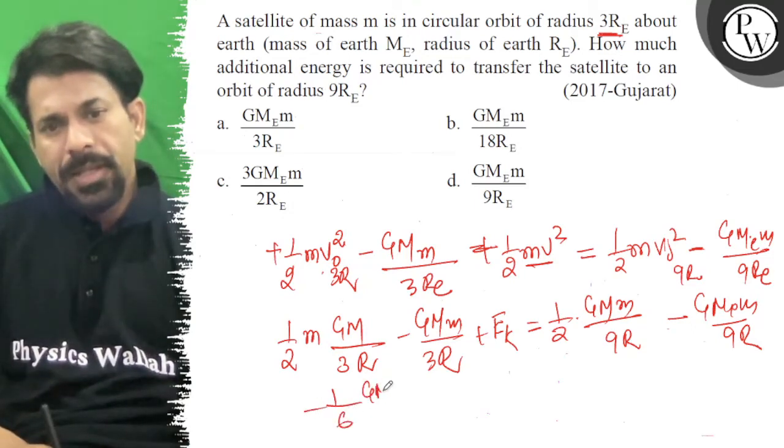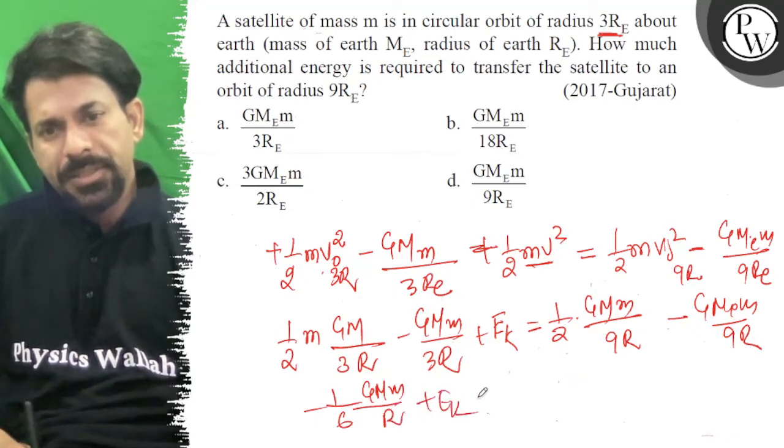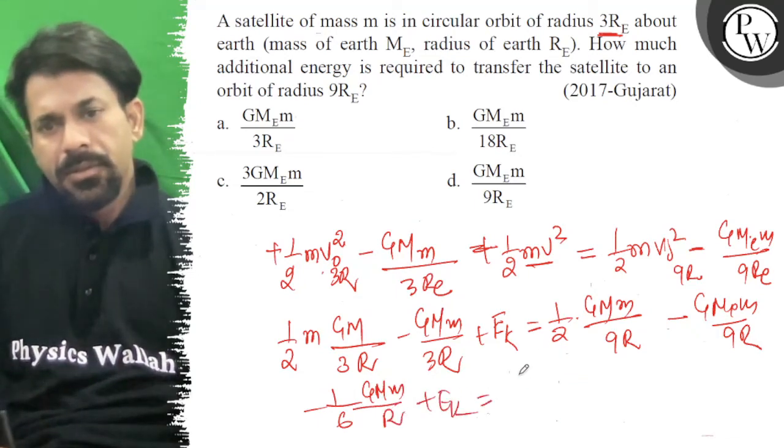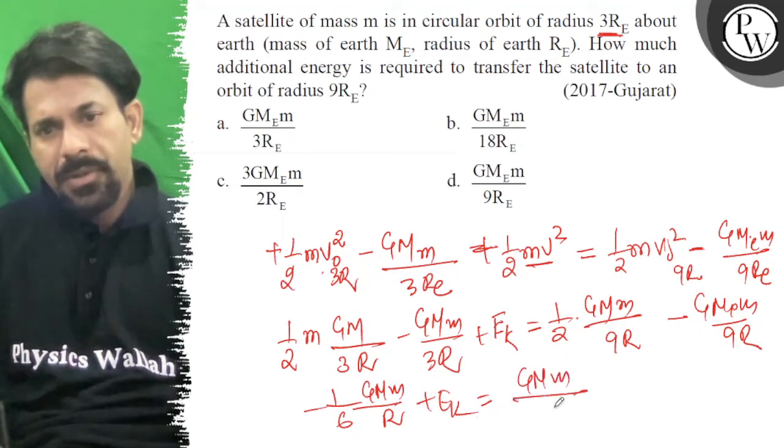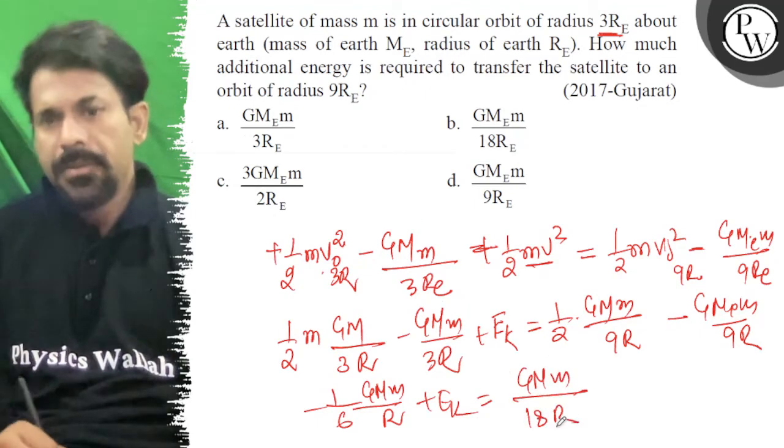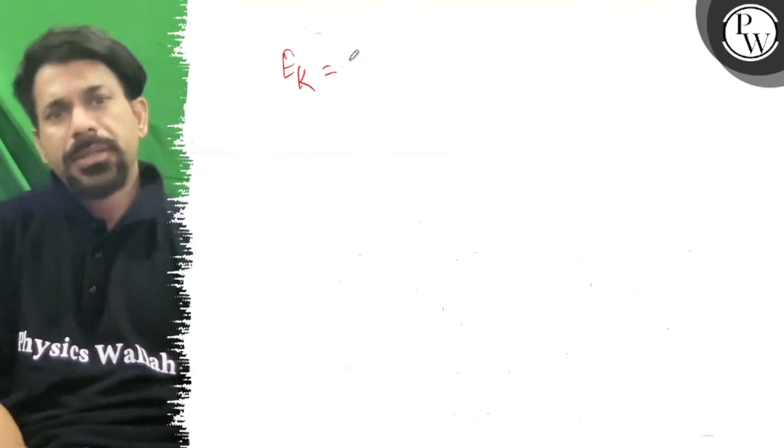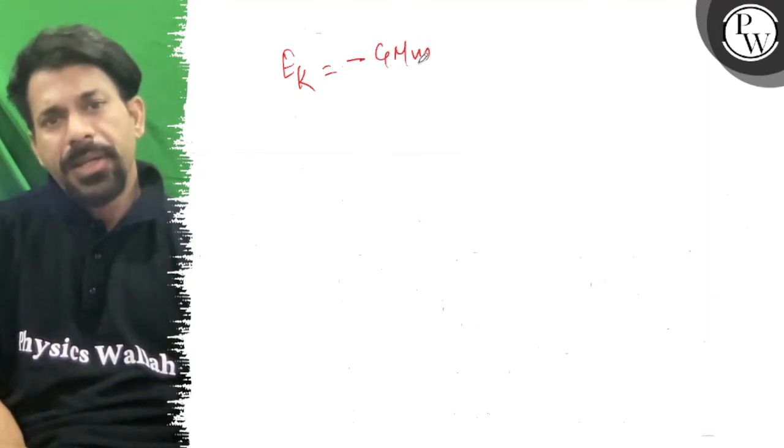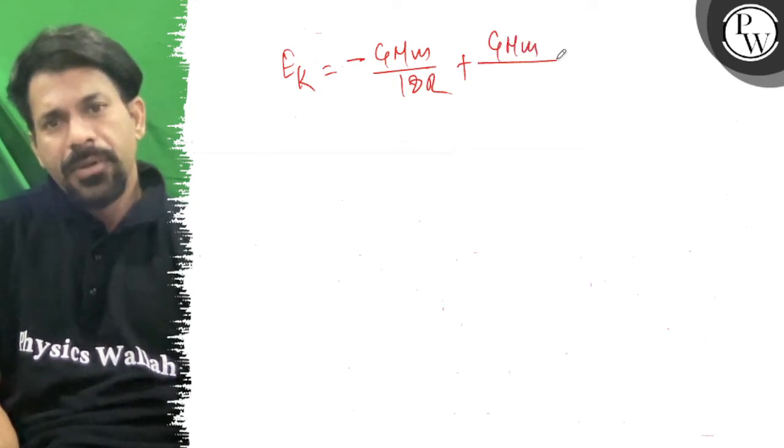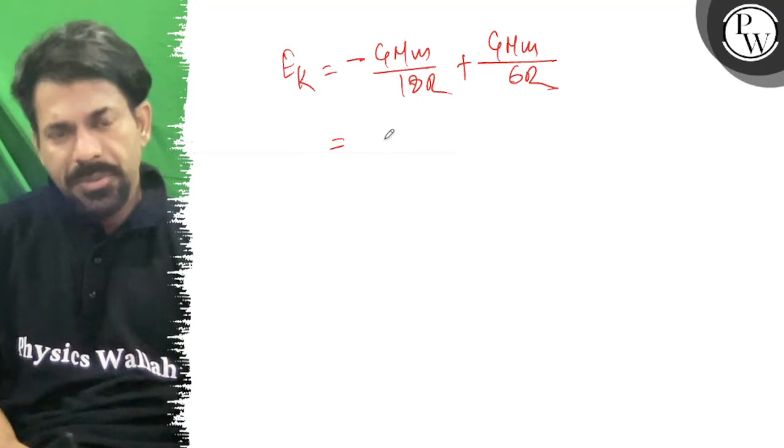Minus GM by R plus kinetic energy is equal to minus GM by 18R minus GM by 18R. Minus and plus, GM by 6R. So if I take the LCM, this will become...